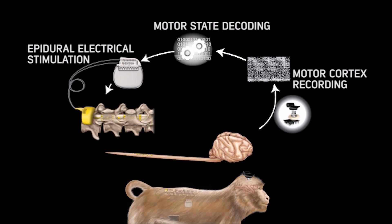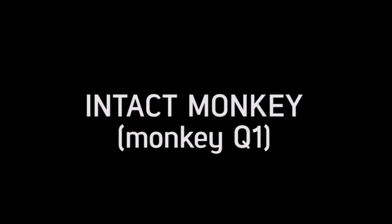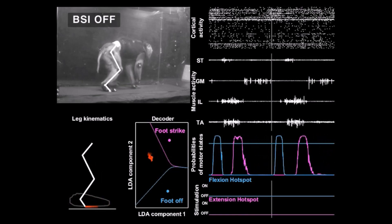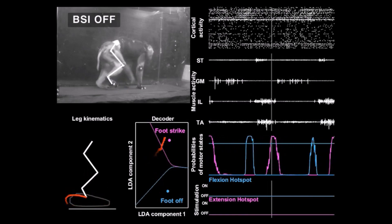We validated the brain-spinal interface in intact monkeys walking freely on a treadmill. The decoder accurately predicted foot strike and foot off motor states during continuous locomotion.